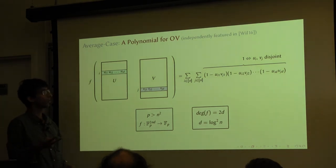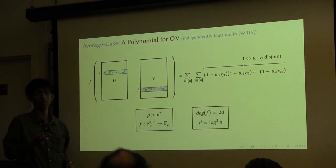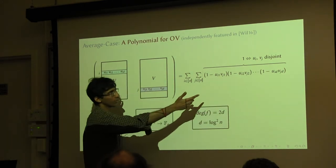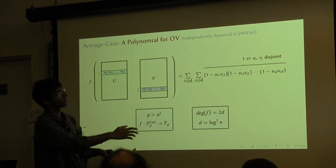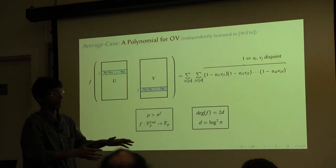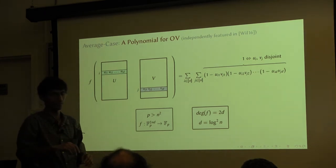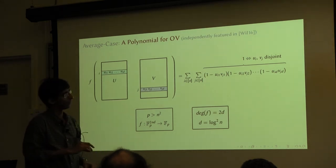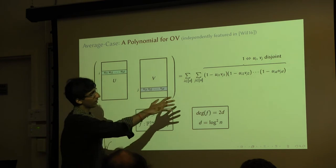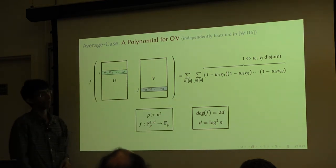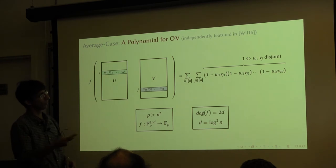The second thing is that you can actually evaluate this polynomial in almost quadratic time, simply by going through all these terms — evaluating each term takes D time, and there are n-squared terms. There are some factors logarithmic in the size of the field, but ignoring those, in roughly n-squared time by going through all terms you can evaluate this polynomial. These two properties will come in while we are doing the reduction.